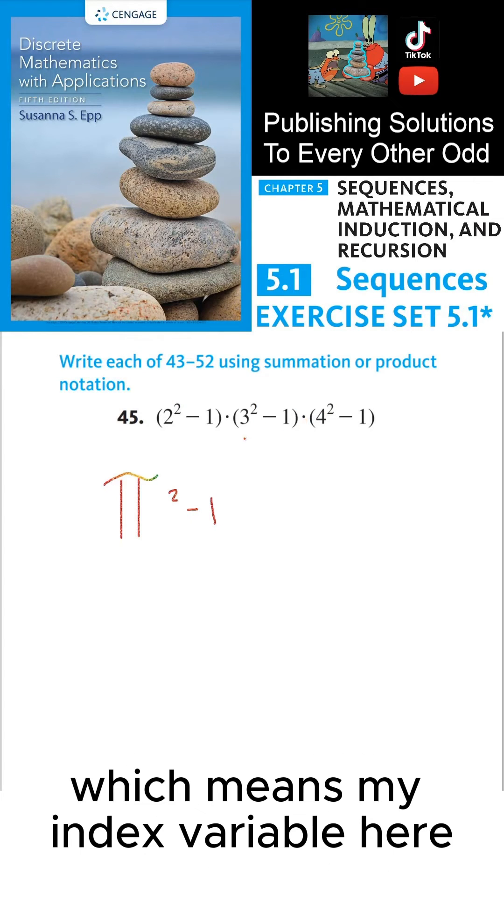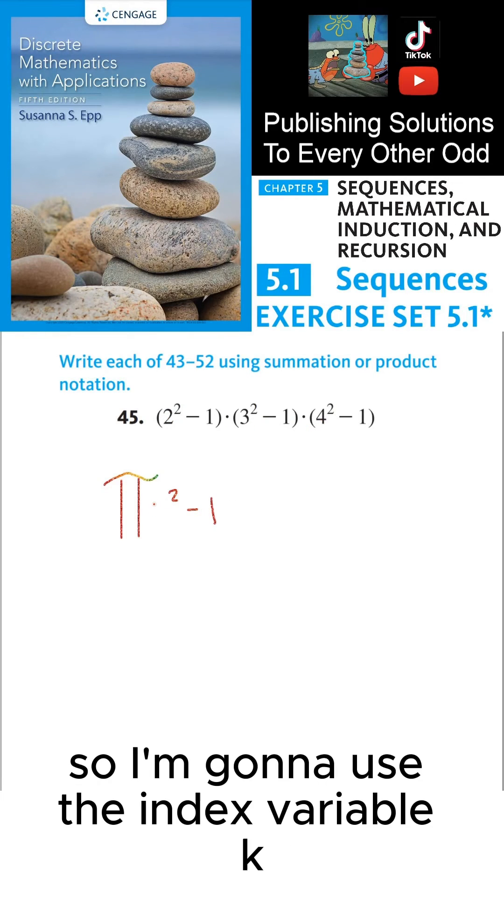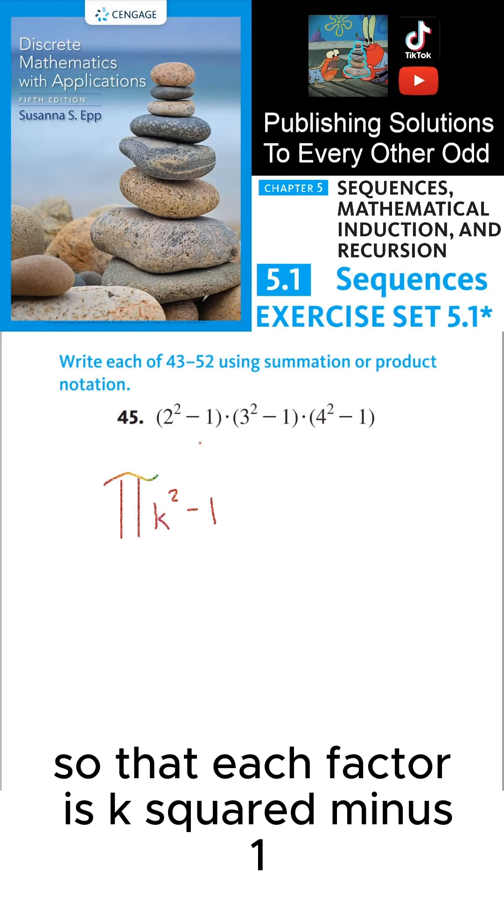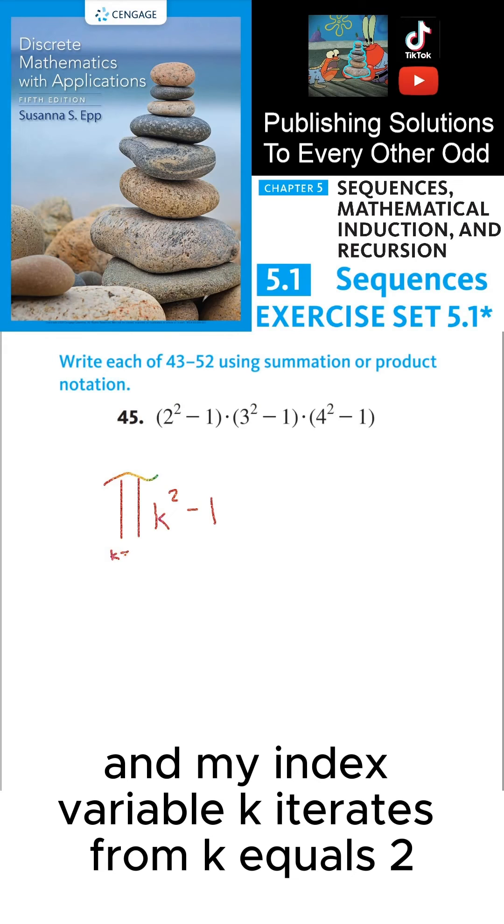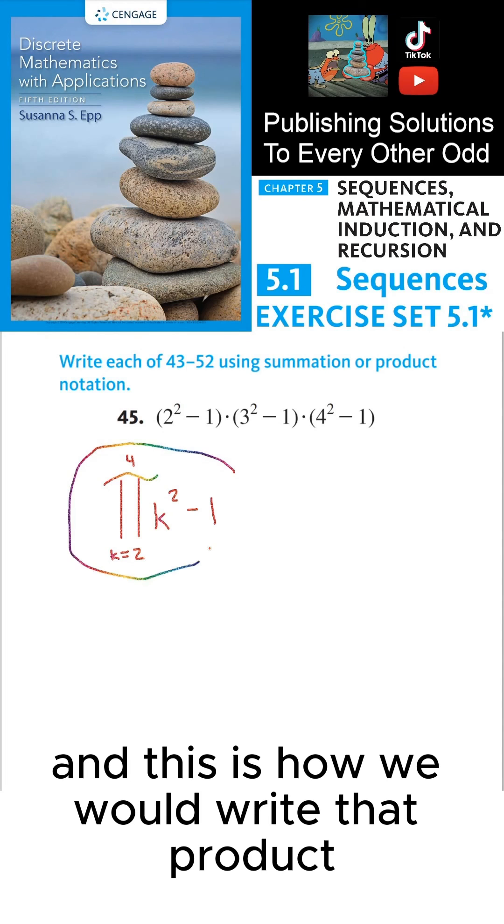Which means my index variable here is iterating from the number 2 to the number 4. So I'm going to use the index variable k so that each factor is k squared minus 1. And my index variable k iterates from k equals 2 to k equals 4. And this is how we would write that product.